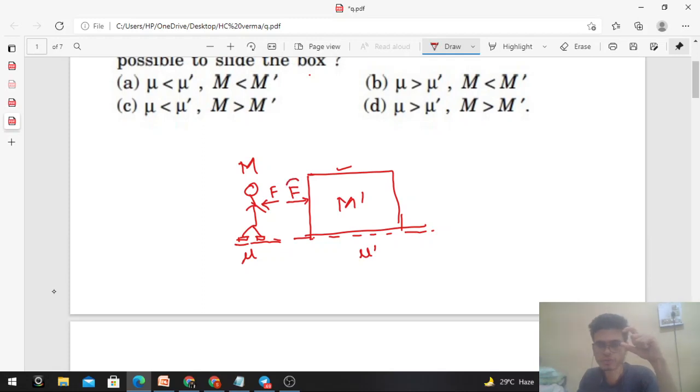The horizontal force F tries to move this block, but there is friction between the block and the floor. So friction opposes relative motion in this direction. This is the friction force on the block by the floor; let's call it F_r'.